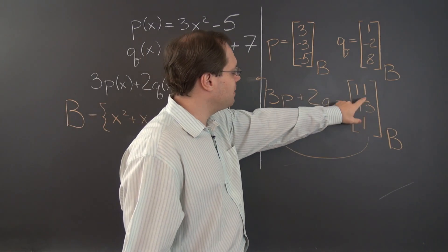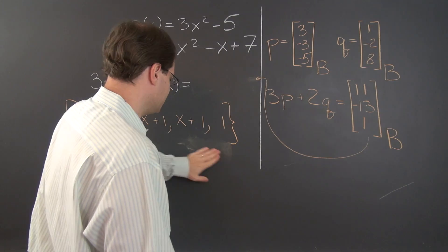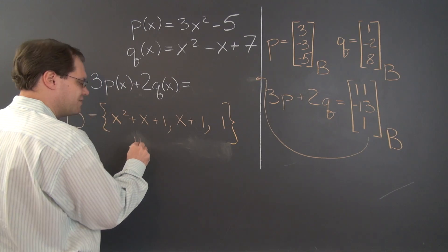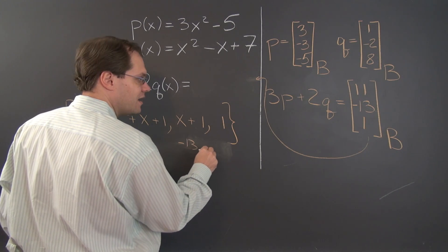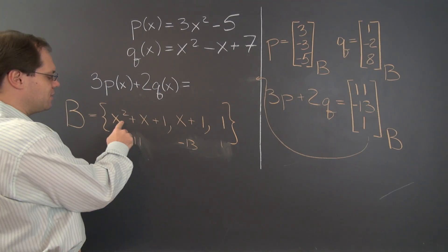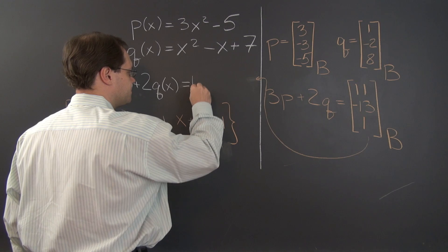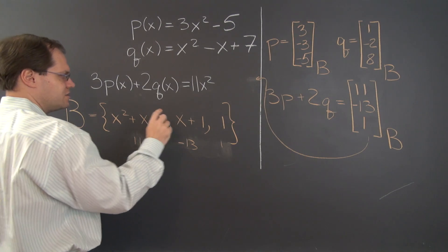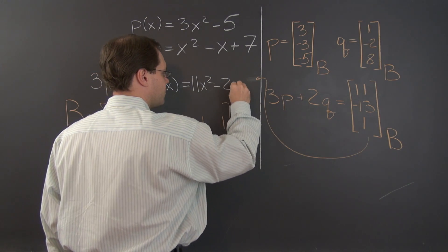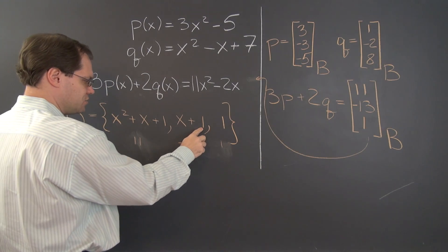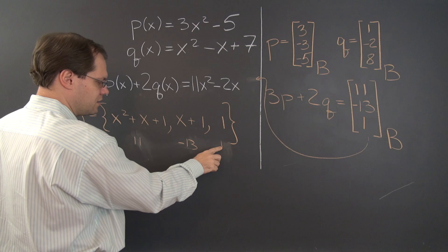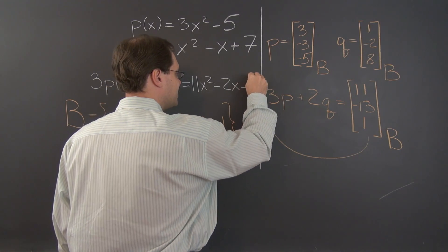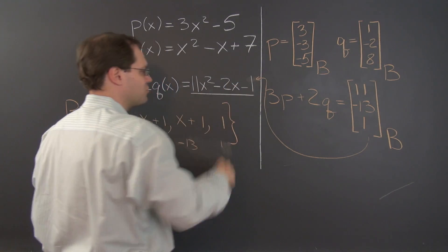Let's go power by power. Copying those numbers: 11, negative 13, and 1. Going power by power, we have 11x squared. Then adding up the x's: 11 minus 13, that's minus 2x. And for the free coefficient: minus 2 plus 1, so minus 1. And that's our real-life answer.